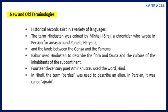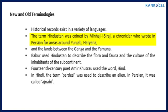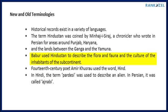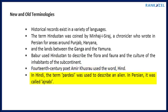Historical records exist in a variety of languages, and new and old terminologies differ. The term 'Hindustan' was coined by Minhaj-i-Siraj, a chronicler who wrote in Persian, for areas around Punjab, Haryana, and the lands between the Ganga and the Yamuna. Babar used 'Hindustan' to describe the flora, fauna, and culture of the subcontinent. The 14th-century poet Amir Khusro used the word 'Hind'. The term 'pardesi' was used for a foreigner in Persian; in Arabic it was called 'ajanabi'.